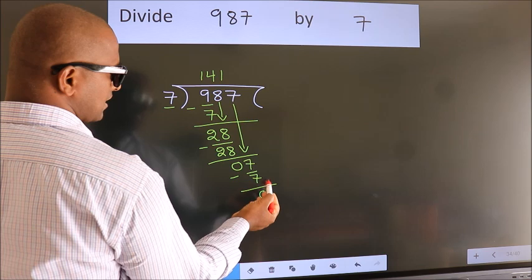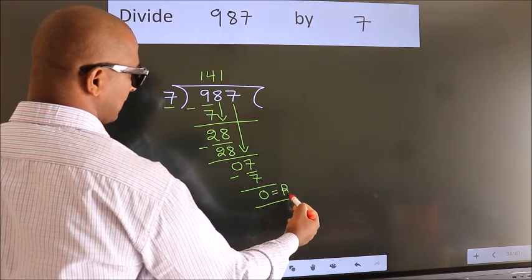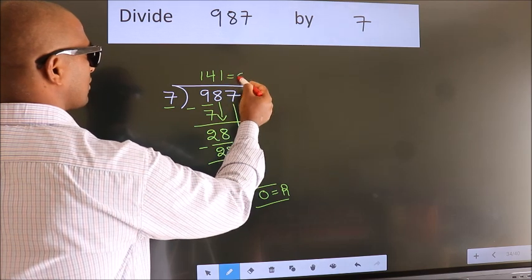No more numbers to bring down. So we stop here. This is our remainder. This is our quotient.